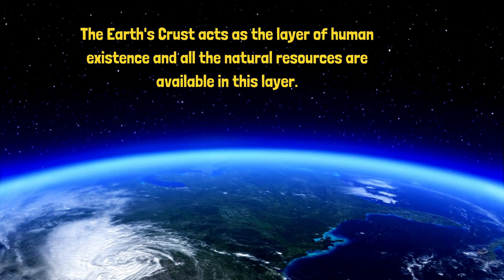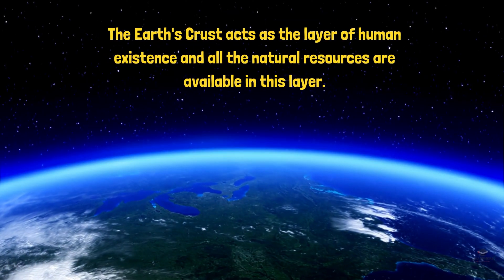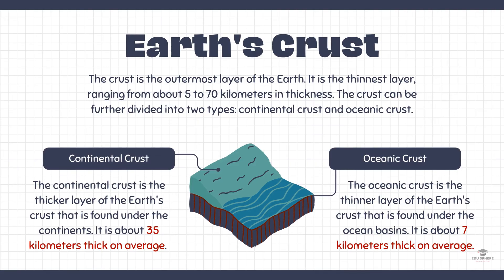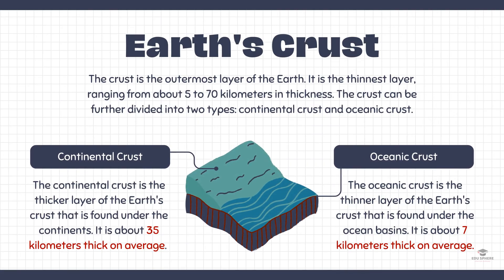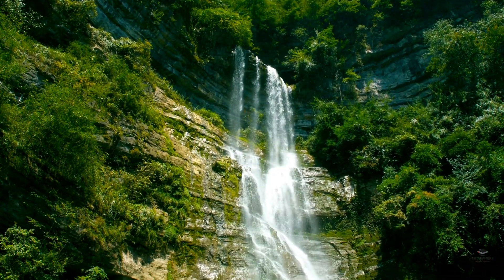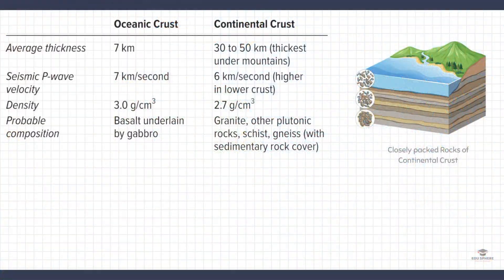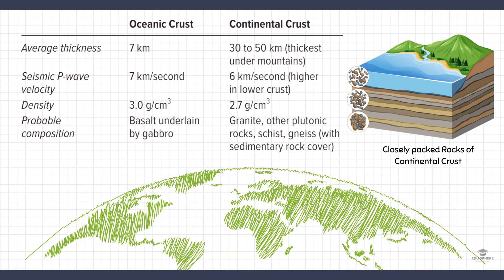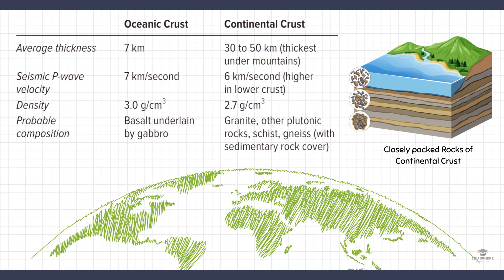Let us start with the topmost layer. The crust is the outermost layer of the geosphere and it's the thinnest layer. It is made up of two types of rocks: the oceanic crust and the continental crust. The continental crust makes up the land on Earth, while the oceanic crust forms Earth's oceans. The continental crust is thicker, while the oceanic crust is thinner and denser, meaning that the rocks it is made up of are more closely packed together.